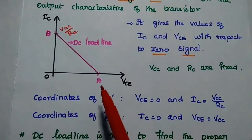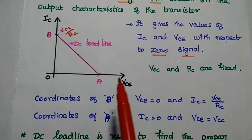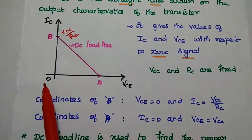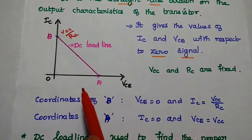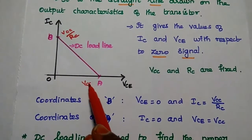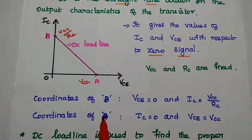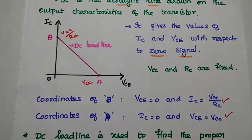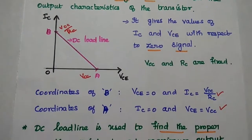Similarly, we can get the second coordinate value by making the IC value zero. Whenever IC is equal to zero, VCE becomes simply the supply voltage VCC. So these two are the coordinates of this DC load line.